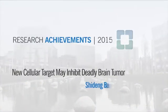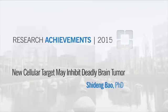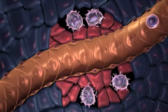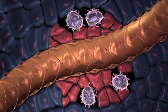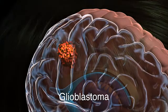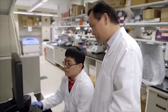New cellular target may inhibit deadly brain tumor. Macrophages in the immune system normally destroy cancer cells, but that is not always the case when it comes to glioblastoma, a fast-growing deadly brain cancer.